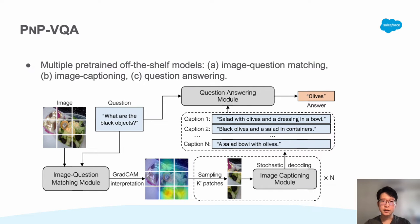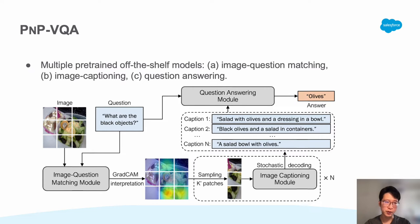Here is PNP-VQA's overall framework. It consists of multiple off-the-shelf models organized into three different modules: image-question matching, image captioning, and question answering modules.